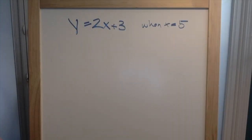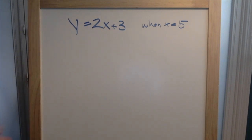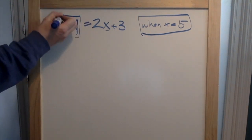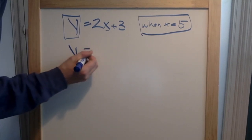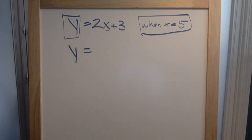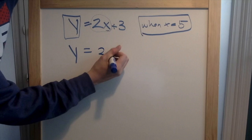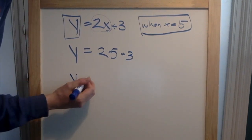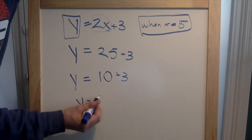The last type of problem we're going to talk about today is called a two-step equation. We have Y equals two X plus three. We have two letters, Y and X, that we need to solve. This problem has already told us that X equals five, so we're now trying to solve for Y. We plug in our X. We know when a number and a letter touch, like two X, we multiply. So Y equals two times five plus three. Two times five is ten, plus three. That means Y equals thirteen.